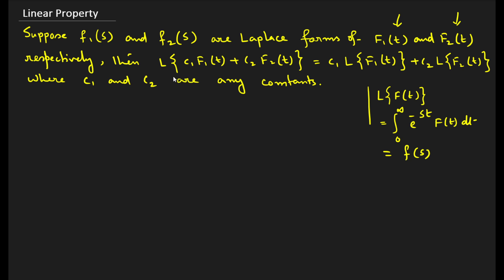What we have to show here is that L{c1·f1(t) + c2·f2(t)}, if we take the transformation like this, we can simply split it as c1·L{f1(t)} + c2·L{f2(t)}. Here c1 and c2 are any arbitrary constants.